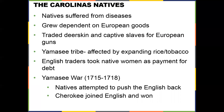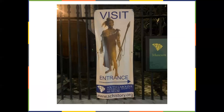The natives suffered from diseases when the Europeans arrived and grew dependent on European goods, trading deer skins and captive slaves for European guns. The Yamasee tribe was affected by the expanding rice and tobacco fields pushing people back. The Yamasee almost won their fight against the Carolina colonists, but the Cherokee joined the British side and turned the tide. English traders also took native women as payment for debt — a form of human trafficking.